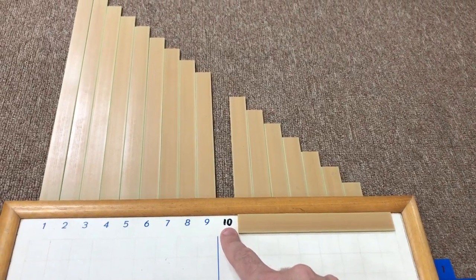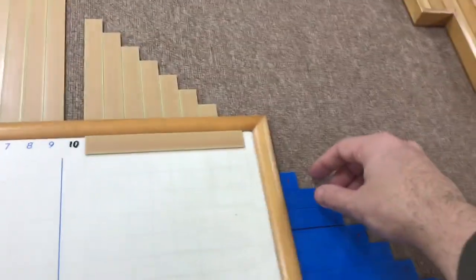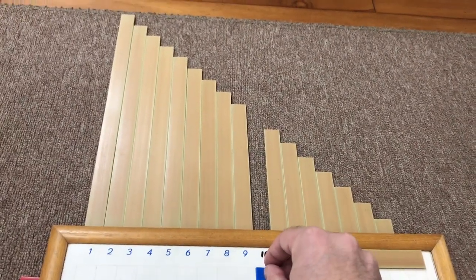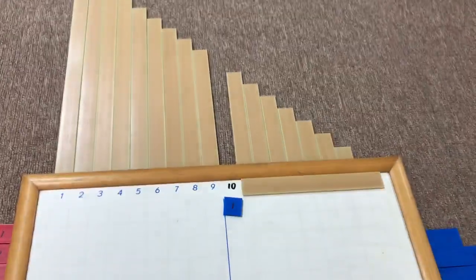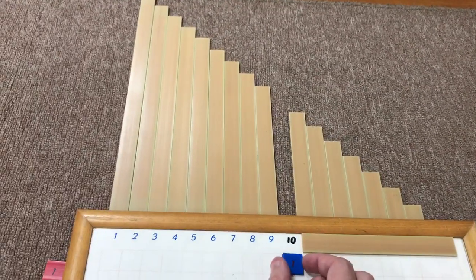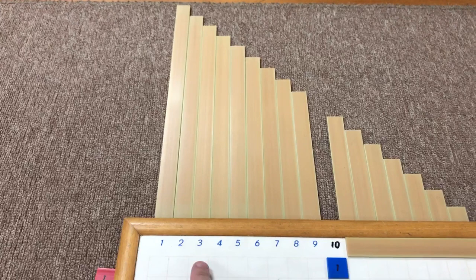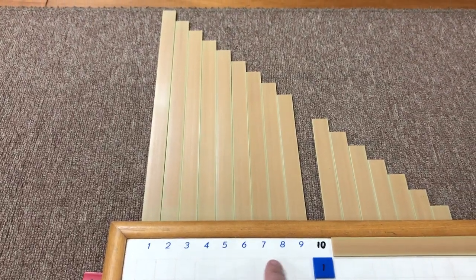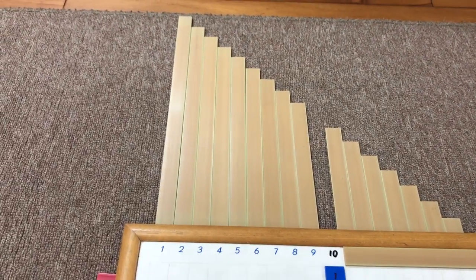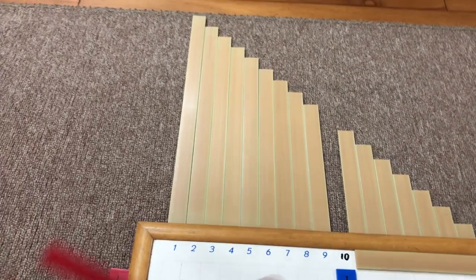So my first problem is 10 minus 1. I'm going to take my blue 1, put it here. And then I can count the rest, right? 1, 2, 3, 4, 5, 6, 7, 8, 9. So I need the 9. And I'll put it right there.